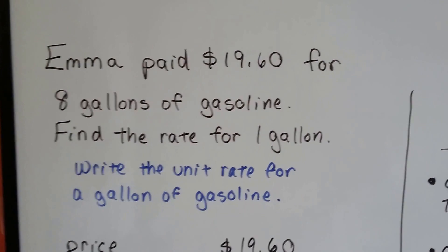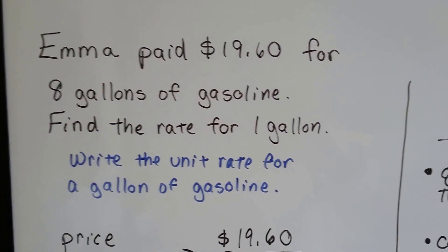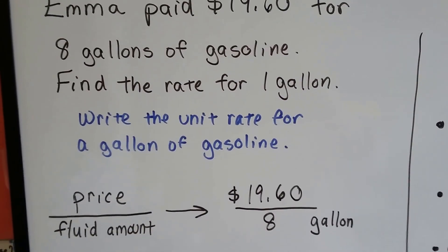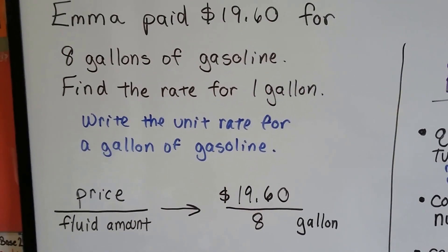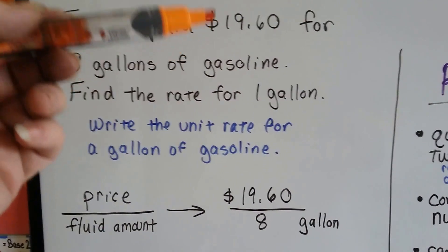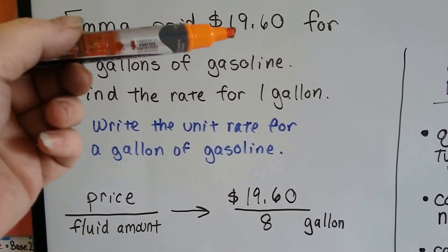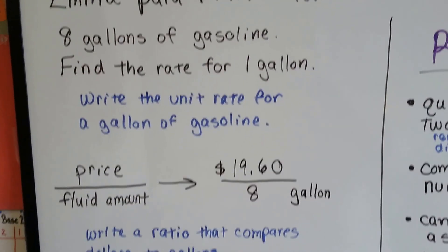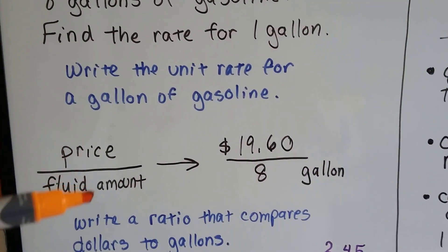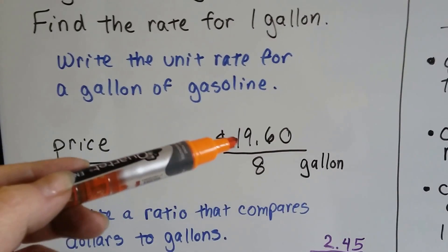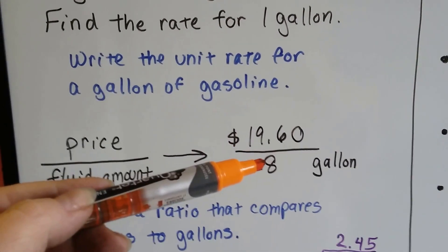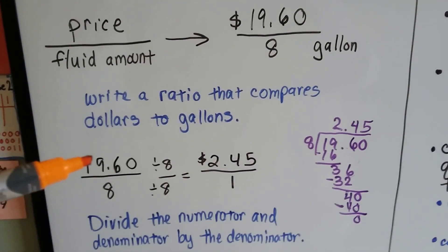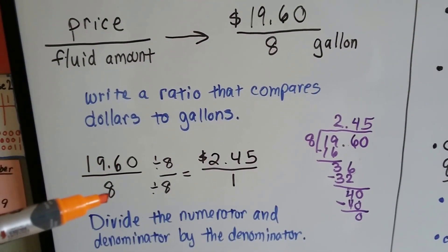Emma paid $19.60 for 8 gallons of gasoline. Find the rate for 1 gallon. We want to find the unit rate per gallon of gasoline. She went to the gas pump, spent $19.60, and got 8 gallons — what did she pay per gallon? So we put the price over the fluid amount: $19.60 over the 8 gallons. We write a ratio that compares dollars to gallons.